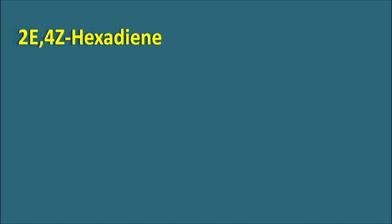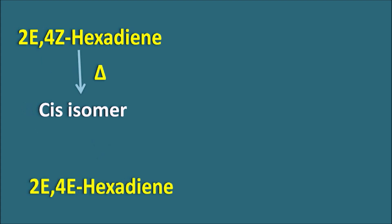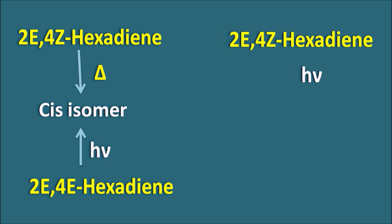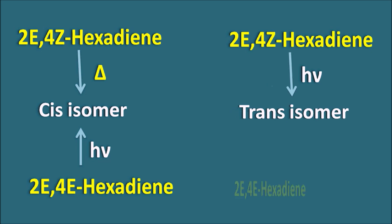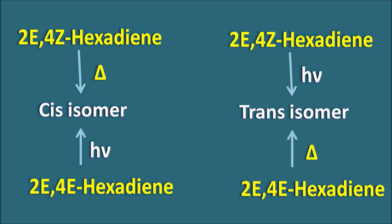To summarize: 2E4Z hexadiene on supply of thermal energy gives the cis isomer. On the other hand, 2E4E hexadiene supplied with photo energy also gives the cis isomer — even though the source of energy is different. Similarly, 2E4Z hexadiene with photo energy gives the trans isomer, and 2E4E hexadiene with thermal energy also gives the trans isomer. That means 2E4Z and 2E4E produce the same isomer when supplied with different sources of energy — one thermal and the other photo.